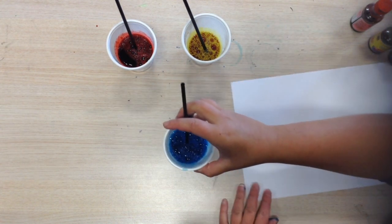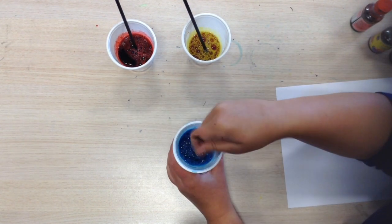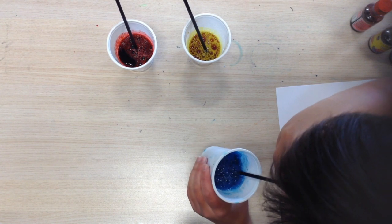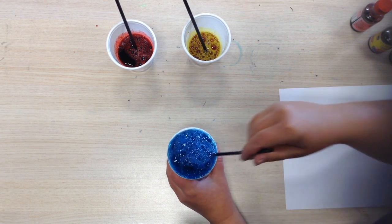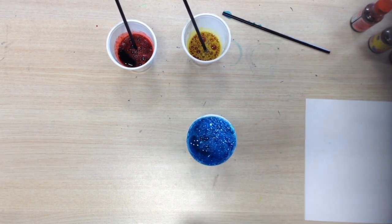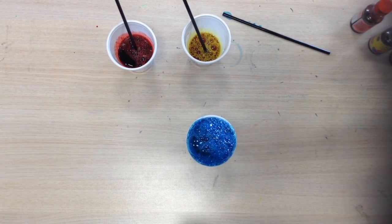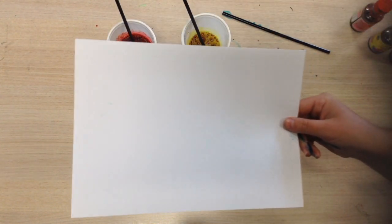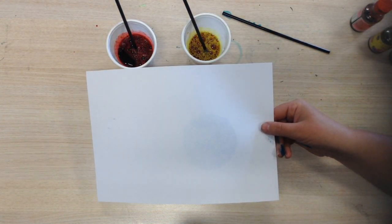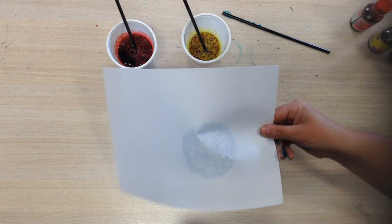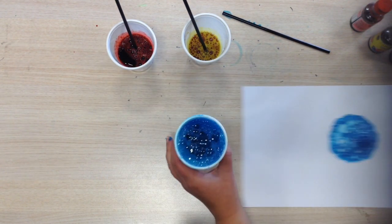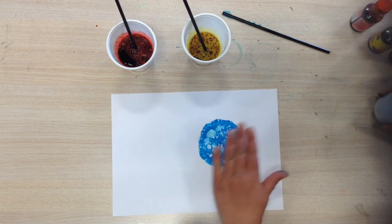First one, we move our paper out of the way. You have to blow bubbles. Once you've blown your bubbles, you collect your paper and you put it on top. Hold it for a few seconds, pick it up. Let the bubbles dry on the page.